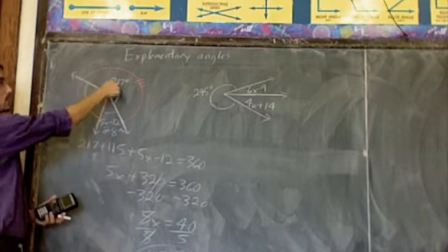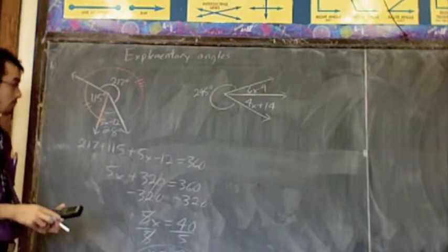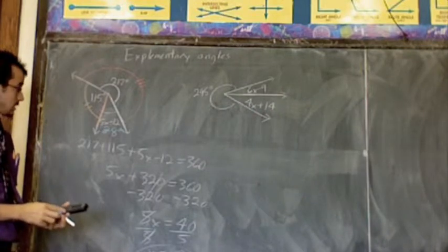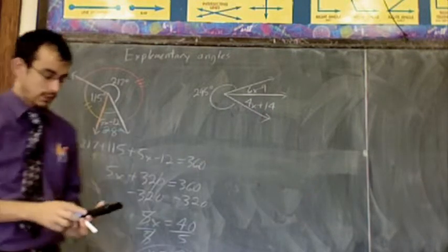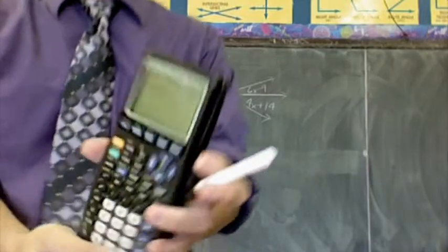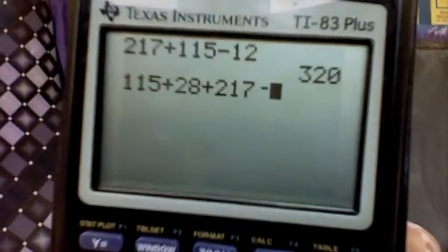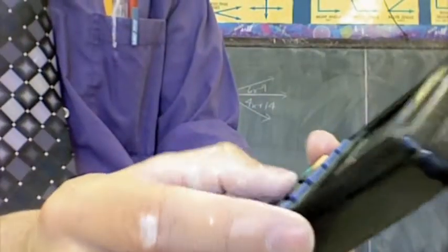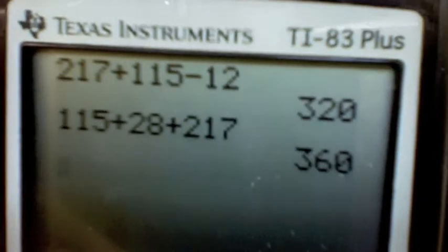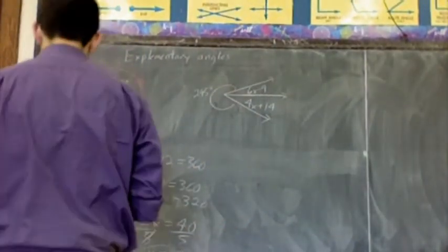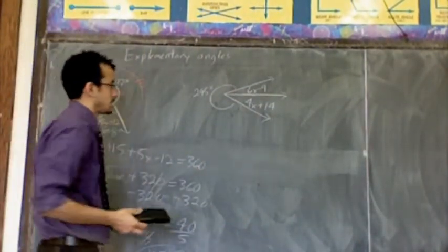So you go in your calculator. You add up 28, 115, and 217. And you cross your fingers and hope it's 360. Let's see. 115 plus 28 plus 217. You should get 360 like I did just there. Alright, that's done.